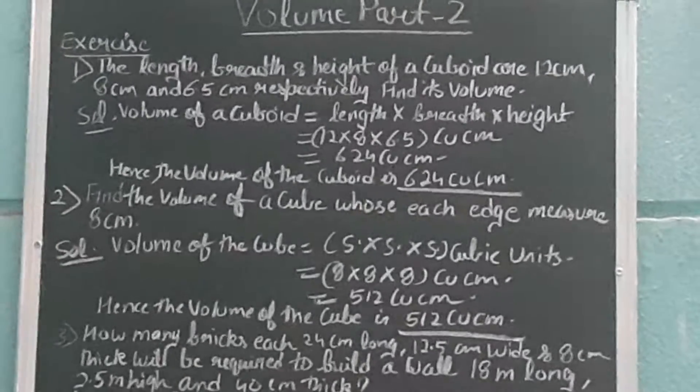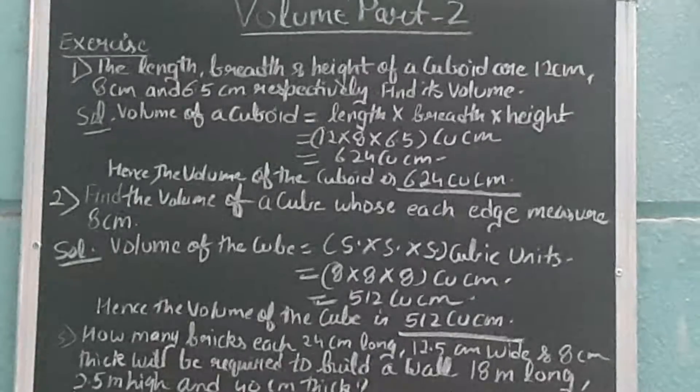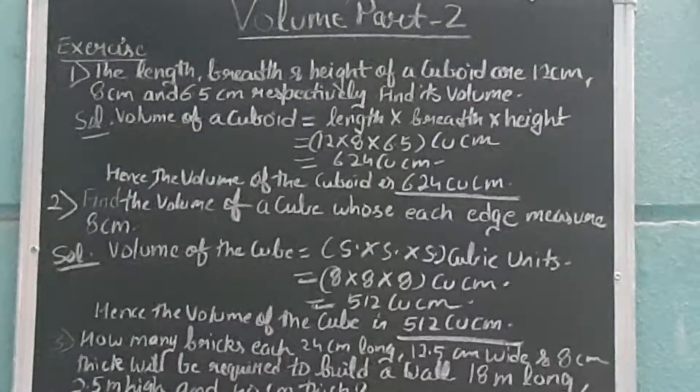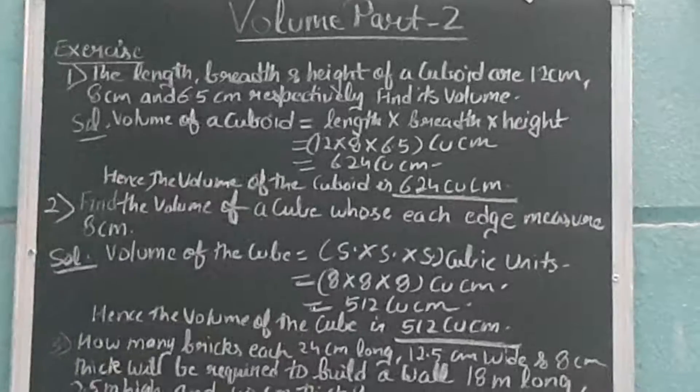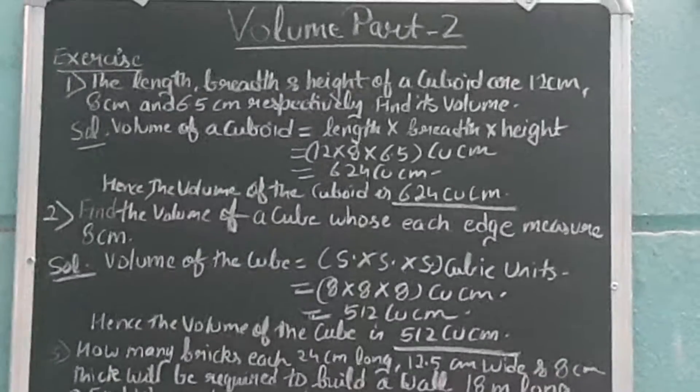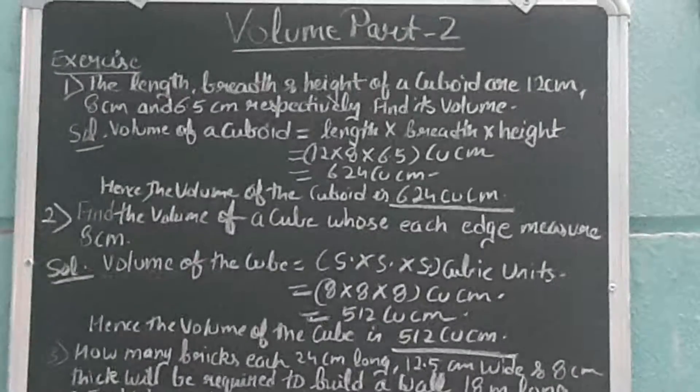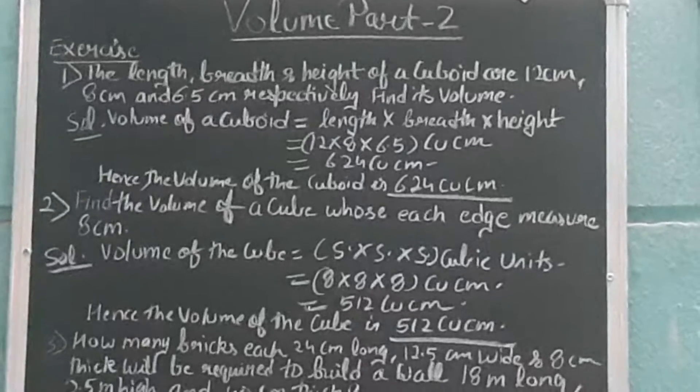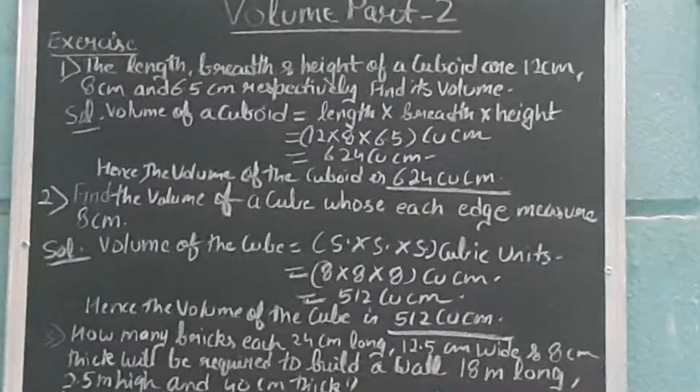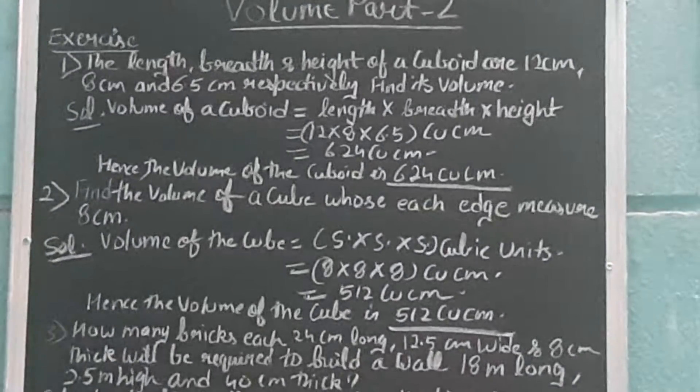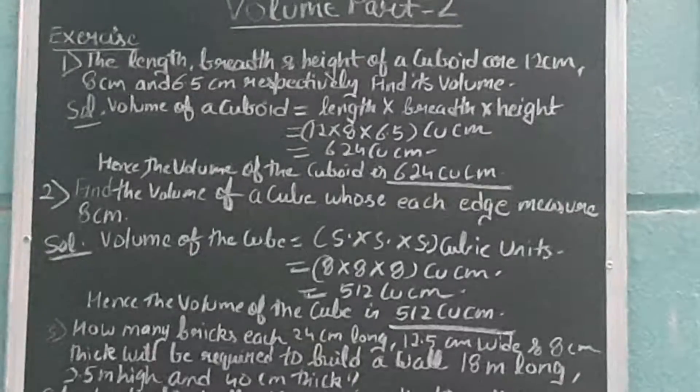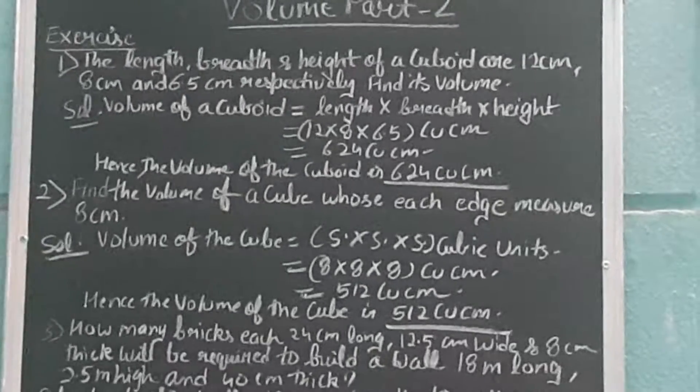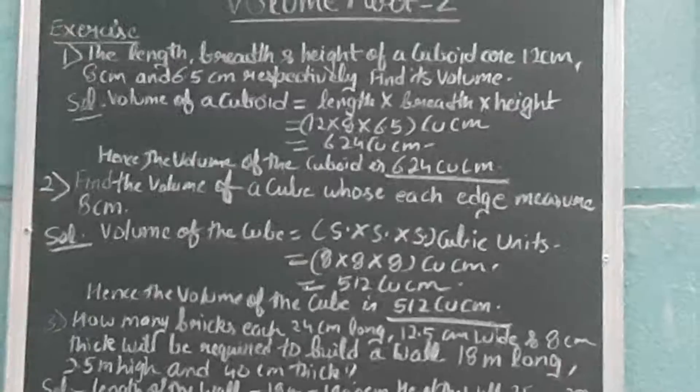So in place of length we'll write 12, in breadth we'll write 8, and height is 6.5 within bracket, then comes cubic unit which is cubic centimeter. Then after multiplying we'll get the answer, that is 624 cubic centimeters.